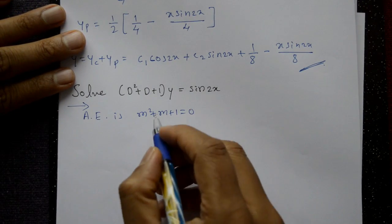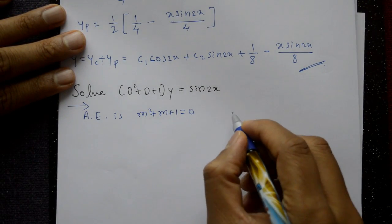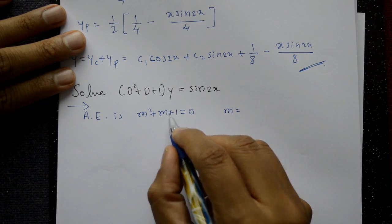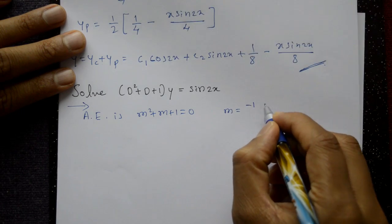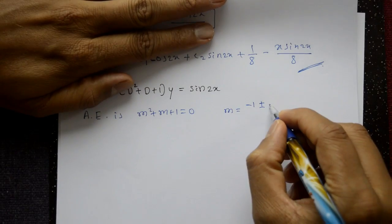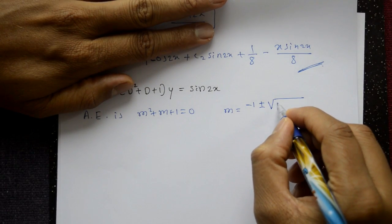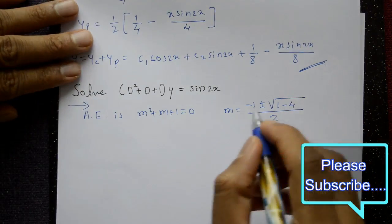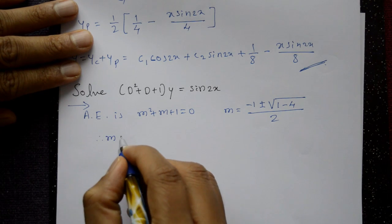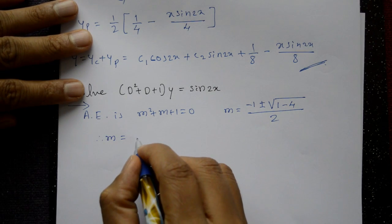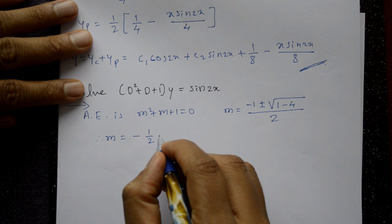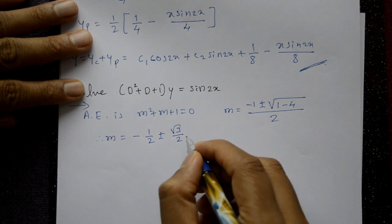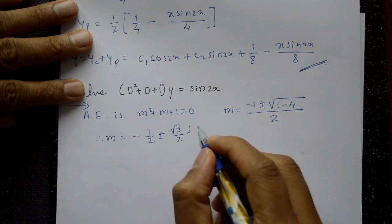This is a quadratic equation. Using the quadratic formula with a=1, b=1, c=1: m = (−1 ± √(1 − 4)) / 2 = −1/2 ± (√3/2)i.